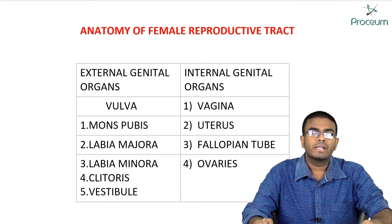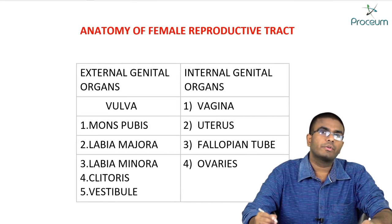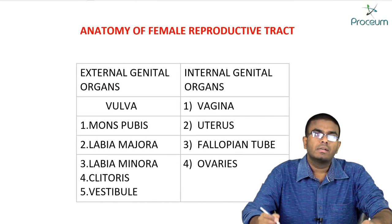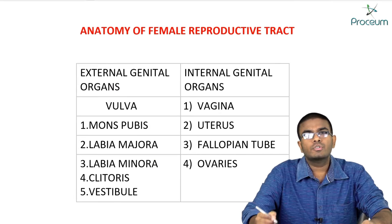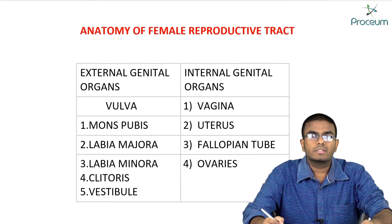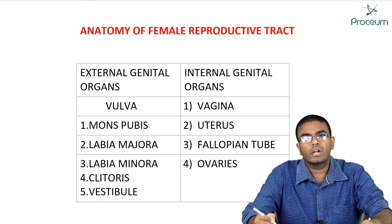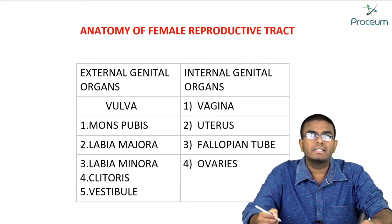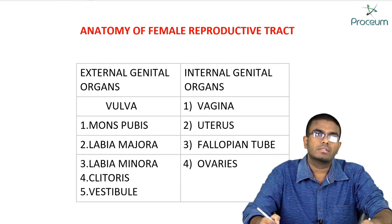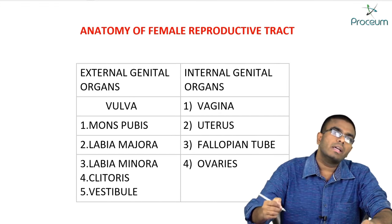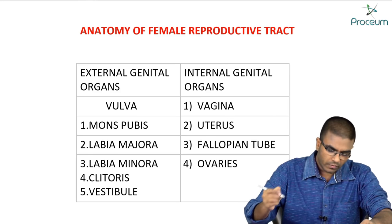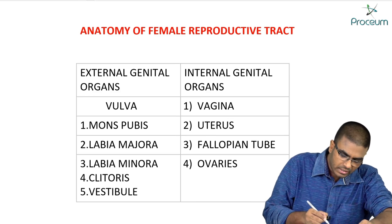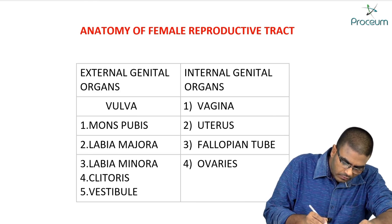Hello students, today let's discuss the anatomy of the female reproductive tract. The female reproductive tract includes two groups of organs: external genital organs and internal genital organs. The first topic we'll be discussing is the vulva.